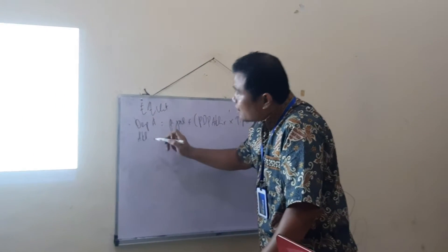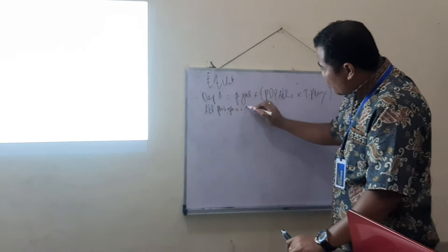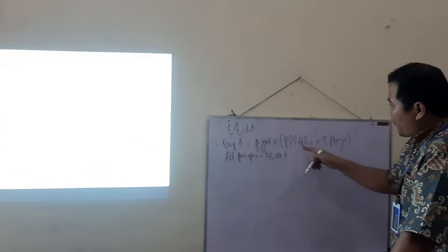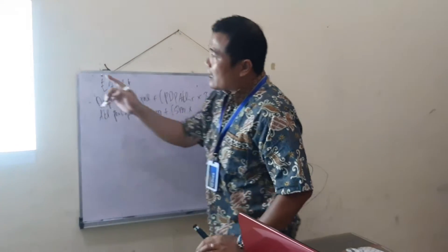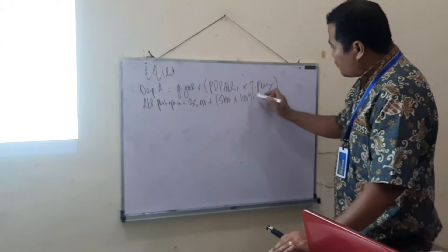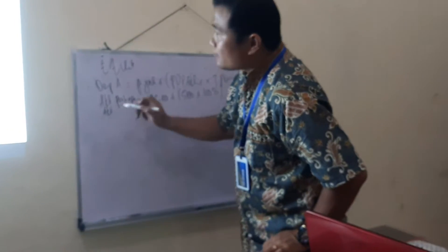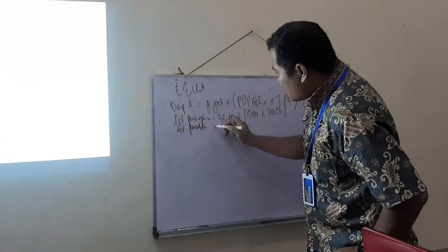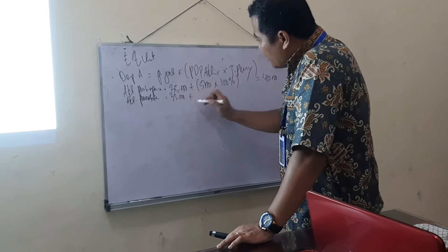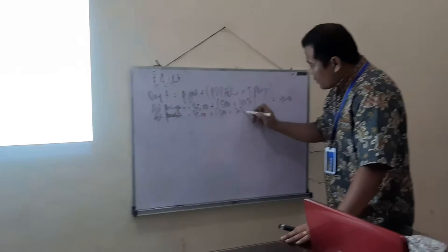Aktivitas pertama adalah Persiapan. Equivalent unit persiapan = produk selesai 35.000 ditambah produk dalam proses akhir 5.000 dikali tingkat penyelesaian persiapan 100%, sehingga diperoleh 40.000. Kemudian aktivitas Pemasakan: 35.000 ditambah 5.000 dikali 20%, sama dengan 36.000.